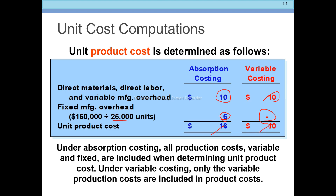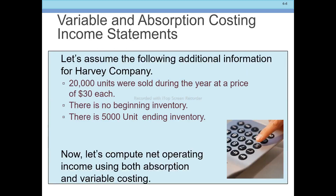You need to know that under absorption costing, all production costs — whether variable or fixed — are included when determining unit product cost. Under variable costing, only variable production costs are included in the cost of the product.